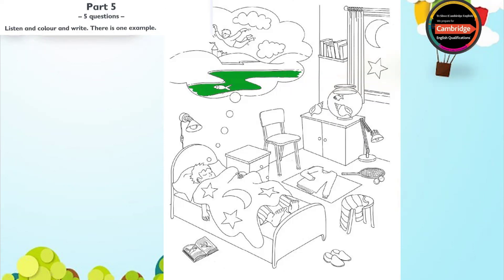Yes. Is the boy having a dream in this picture? Yes, he is. He's flying, look — like the birds in his book. Wow! Can I colour the river in his dream? Yes. Colour the river green. OK. Can you see the green river? This is an example.